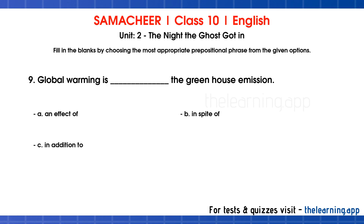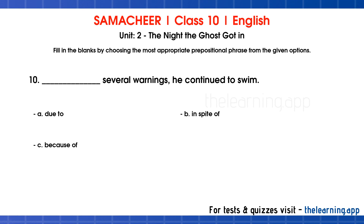Question 9: Global warming is — the greenhouse emission. Options are: a. An effect of, b. In spite of, c. In addition to. Correct answer is a. An effect of.